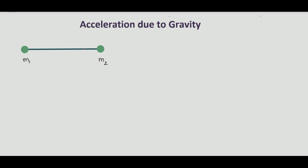We assume that m1 and m2, which are at a distance r from each other, exert a force on each other called the gravitational force of attraction. The force value F is equal to G m1 m2 by r square. This is the magnitude of the force between two particles m1 and m2.